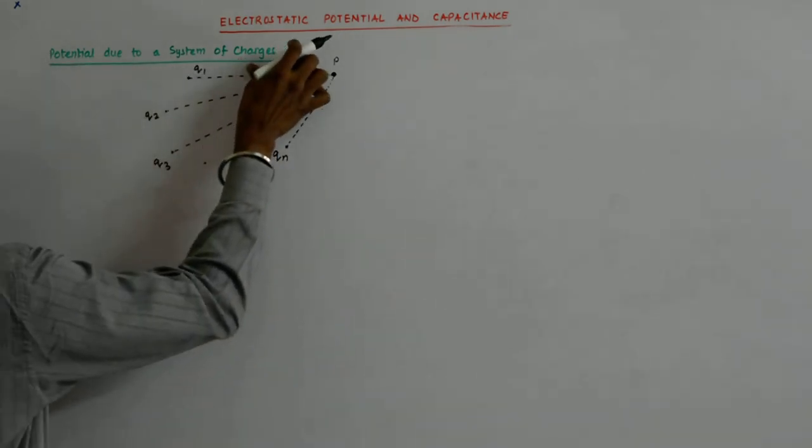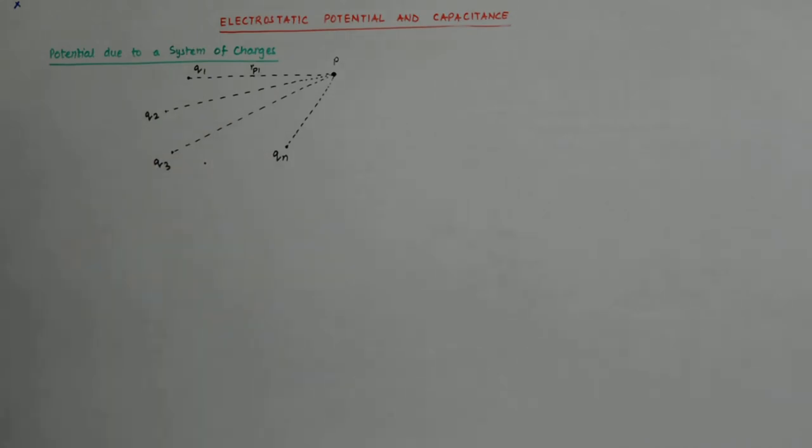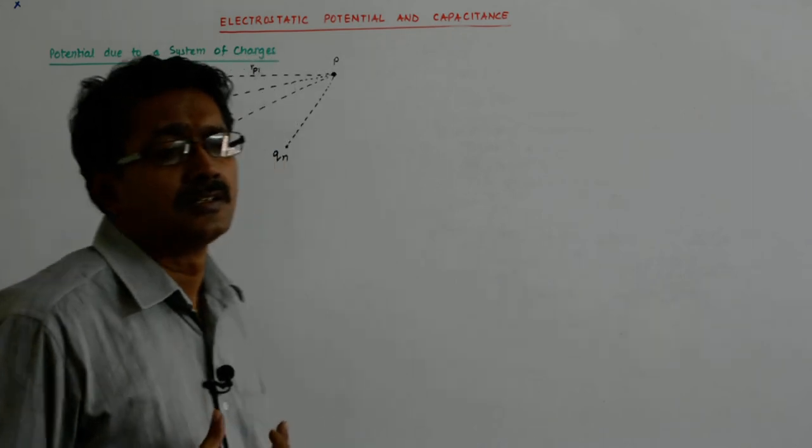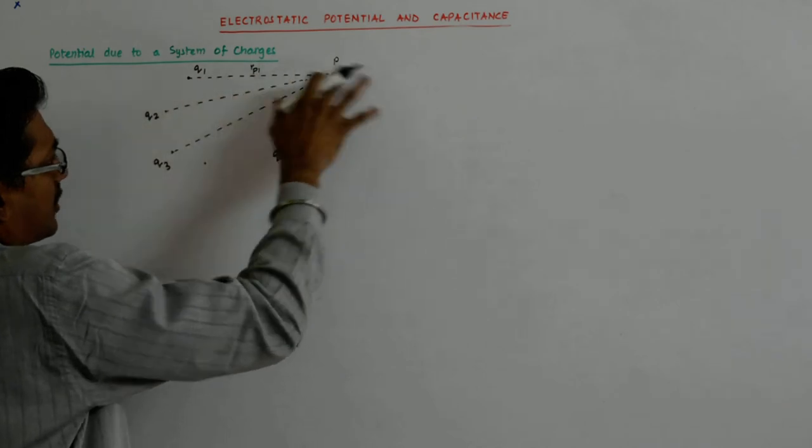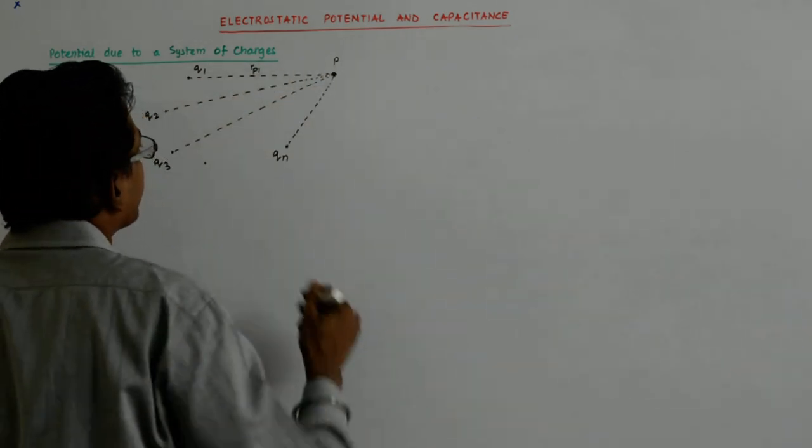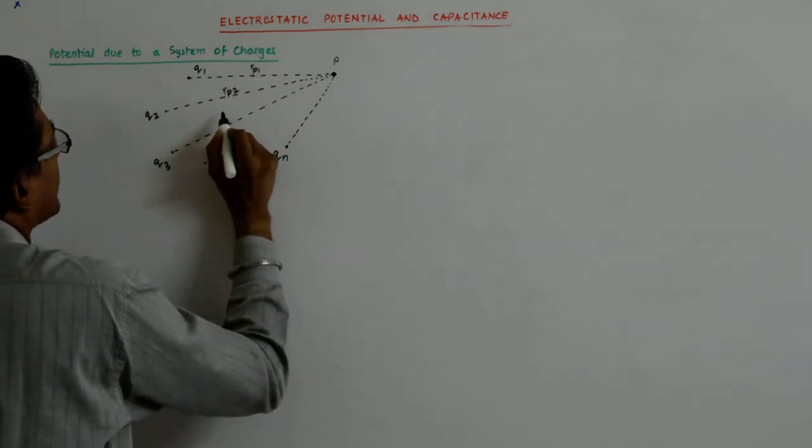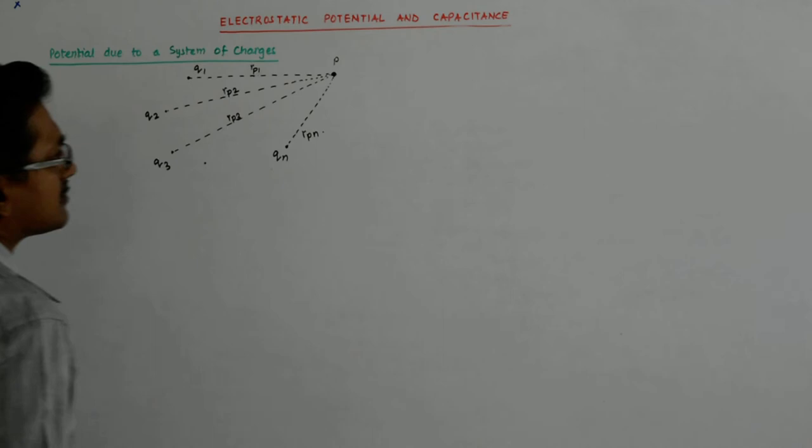Rather I'd like to call it Rp1, because Rp minus R1 will be that vector, and mod of that is Rp1, but I am not concerned about the vector. So whether you write it as R1P or Rp1 does not matter, because this is the distance between charge 1 and point P, and that remains the same. I prefer Rp1. This is Rp2, this is Rp3, this is Rpn.